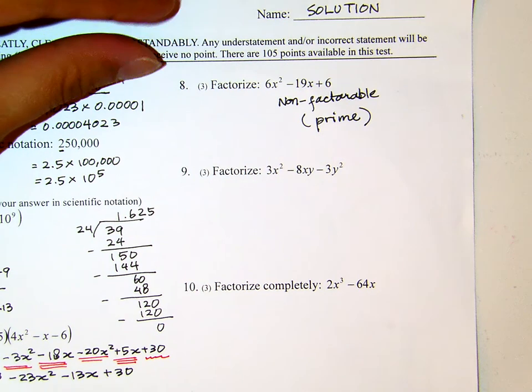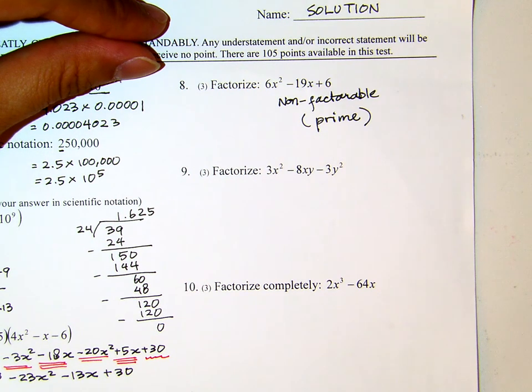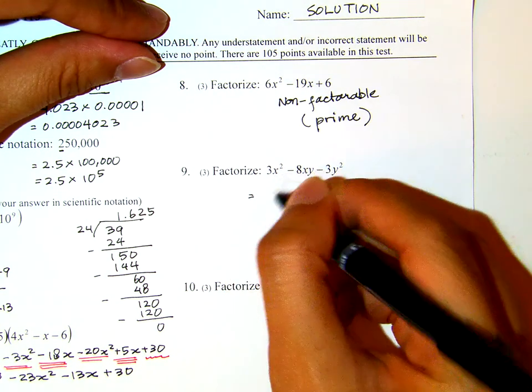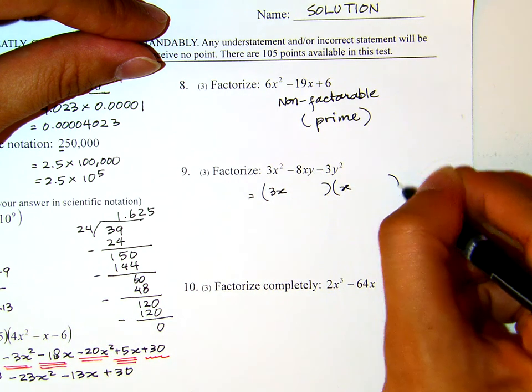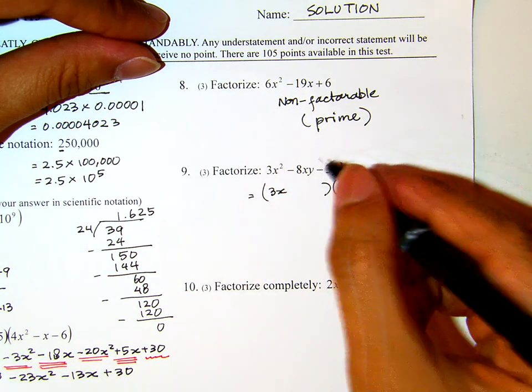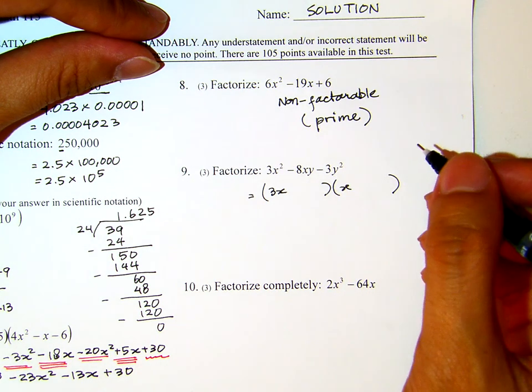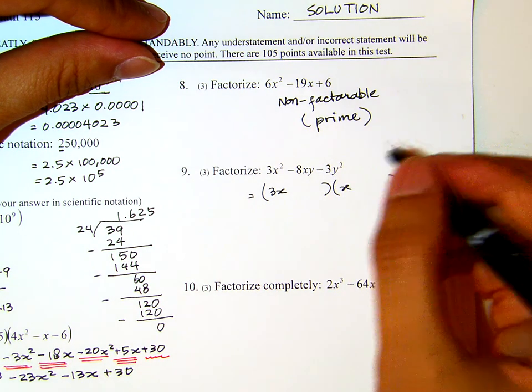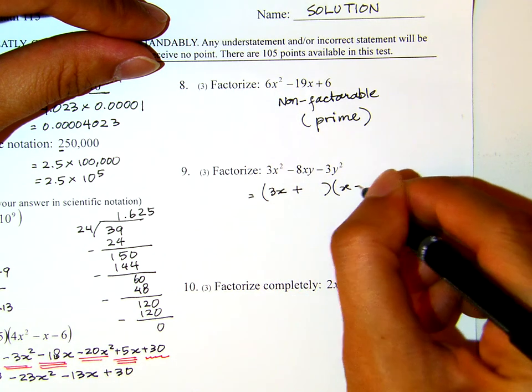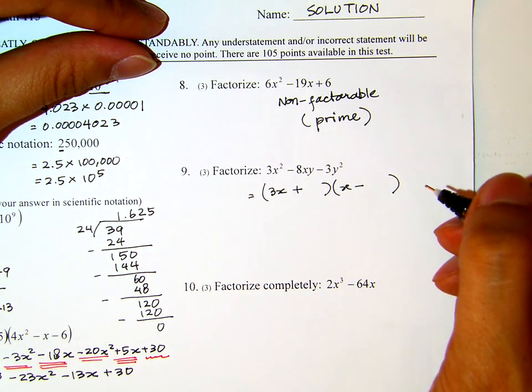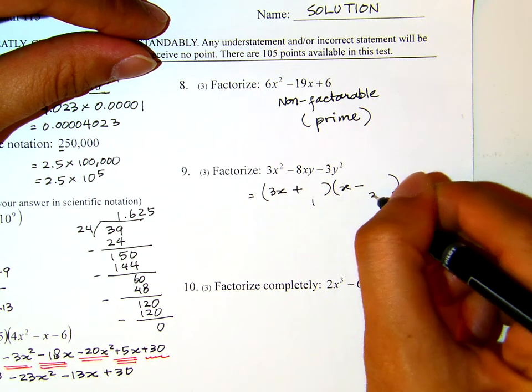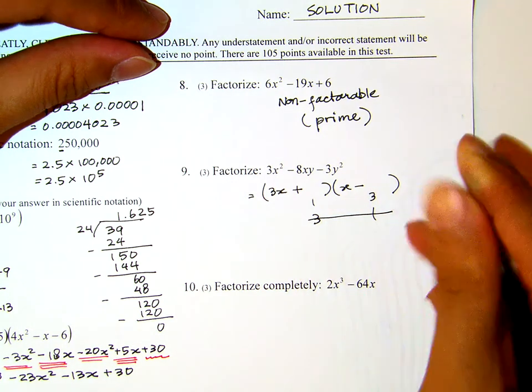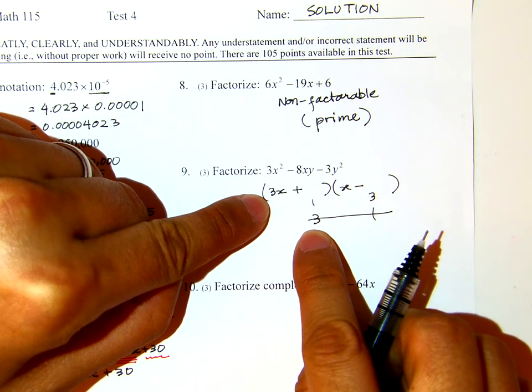Number nine, factorize 3x squared minus 8xy minus 3y squared. Because it is 3x squared, it must be 3x and x, no other way. And then, because the second sign is negative, it will be plus minus, or minus plus, we don't know. Let me put temporarily plus minus. And then, what times what gives me 3? Either 1, 3, or 3, 1.